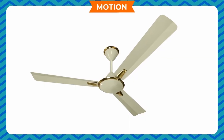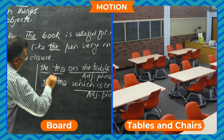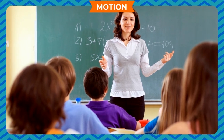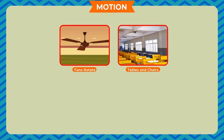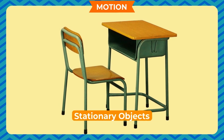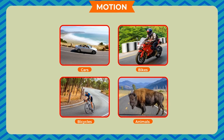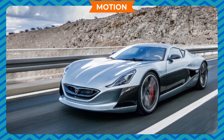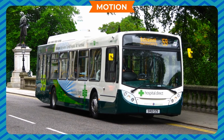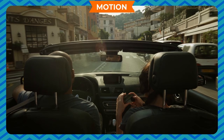Motion. You see many things around yourself. When you are in class, you see students, teachers, board, tables and chairs, school bags, lights, fans, etc. Among these, only students and teacher can move — fans rotate, but tables, chairs, board, lights, and school bags do not move. Objects which do not move are called stationary objects. When you are in your school bus, you see cars, bikes, bicycles, and animals — these objects move and are called movable objects. Movable objects continuously change their positions with respect to stationary objects around them. This continuous change in the position of an object is called motion.